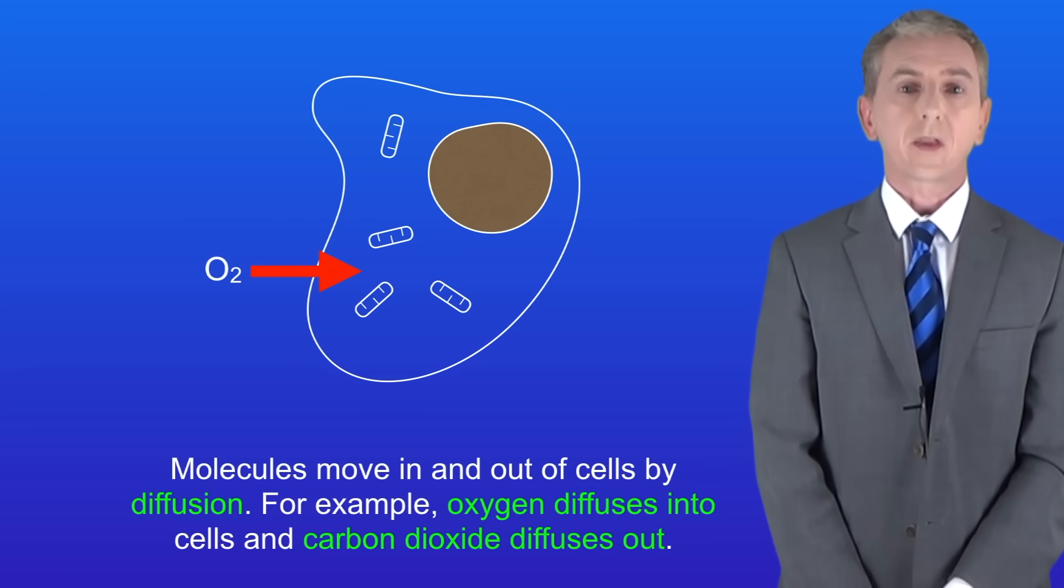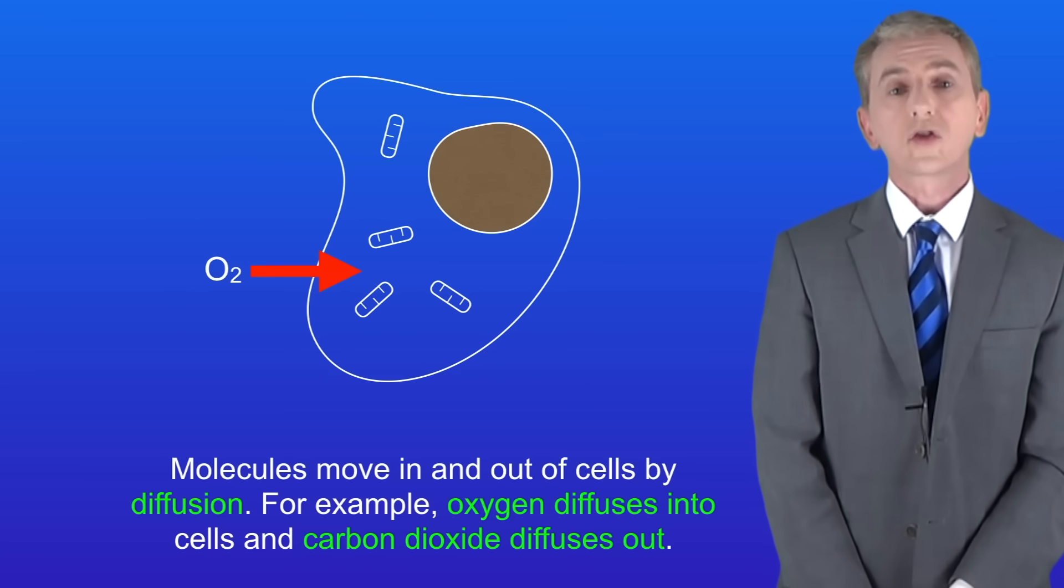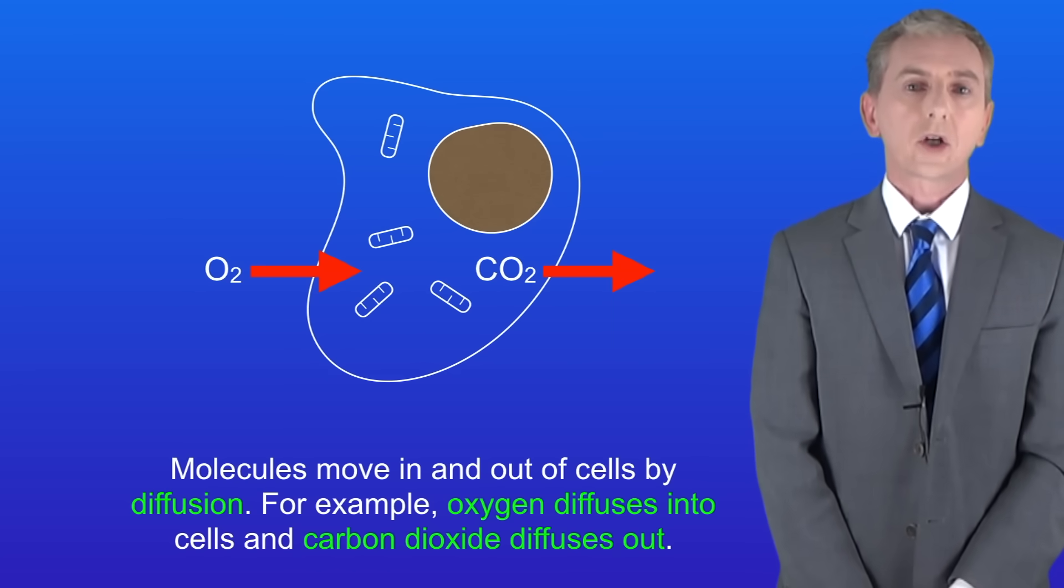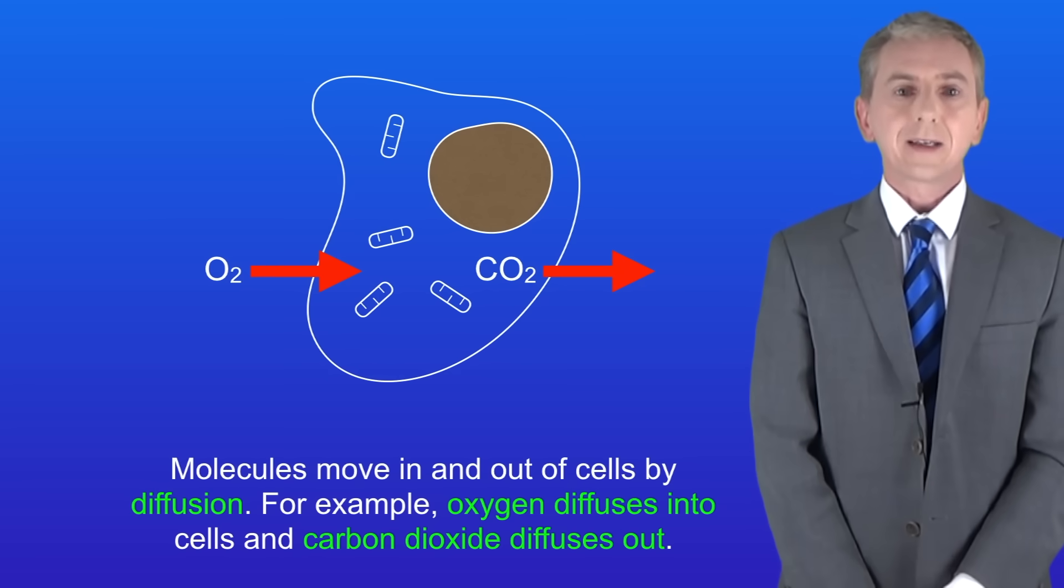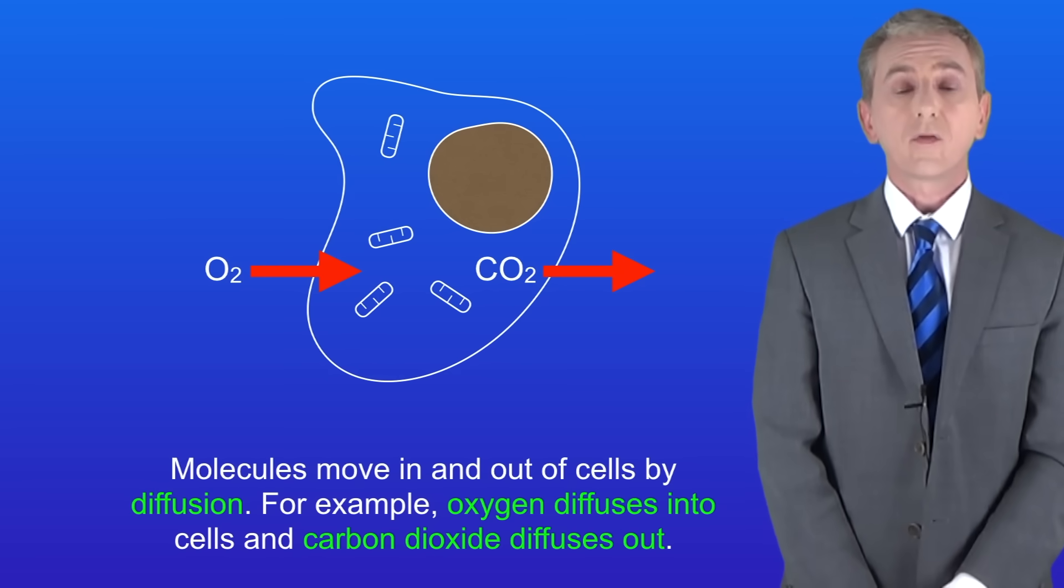In the last video we saw that molecules move in and out of cells by diffusion. For example, oxygen diffuses into cells and carbon dioxide diffuses out. Now one key fact linked to the idea of diffusion is the surface area to volume ratio and we're going to look at that now.